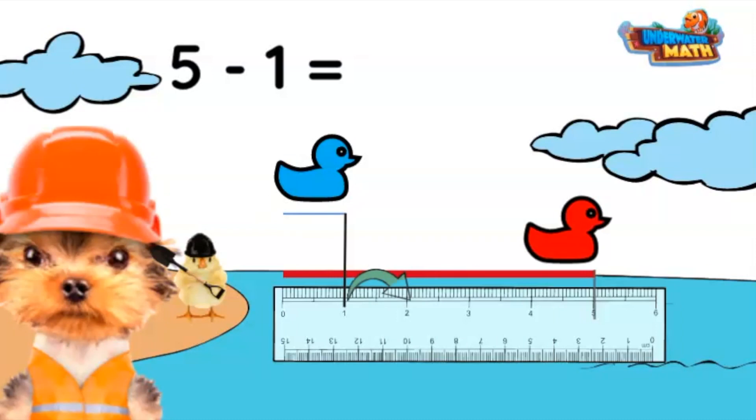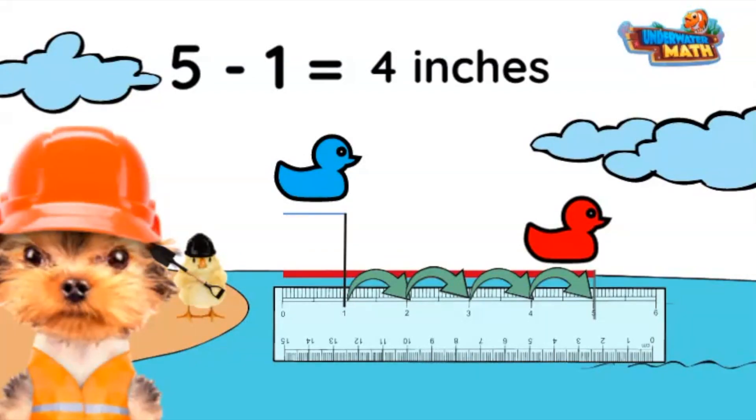There are one, two, three, four inches in between their distance. The red duck glided four more inches than the blue duck.